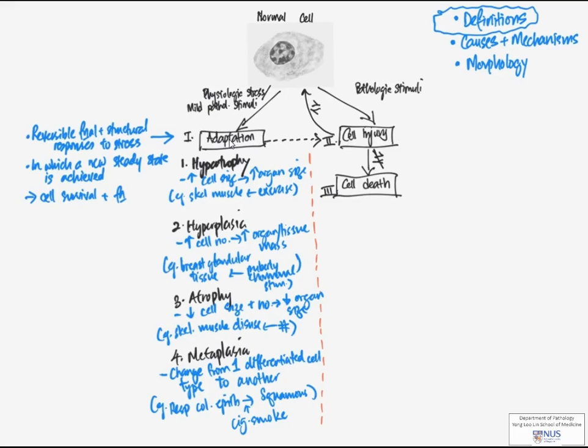We had previously looked at the definitions of the different types of cell adaptation in the previous mind map. Now we're going to look at cell injury and cell death.